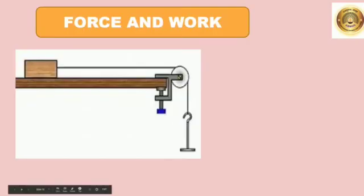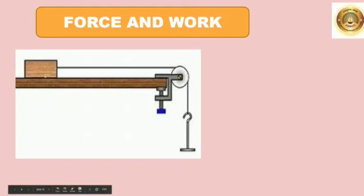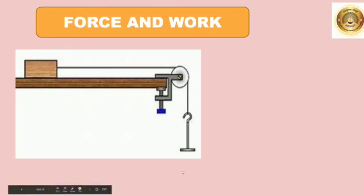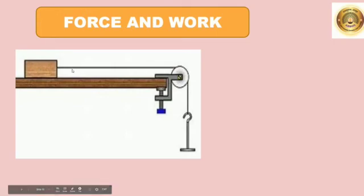Now, let us see the relationship between force, displacement and work. In this figure, a string is attached to a wooden block on a table and passed over a pulley. On applying sufficient weight, the block will be seen to move. When you increase the weight at this end, the block will start moving forward. If the block moves forward, we can say that it has been displaced. Due to the displacement, we say that the force has done some work.